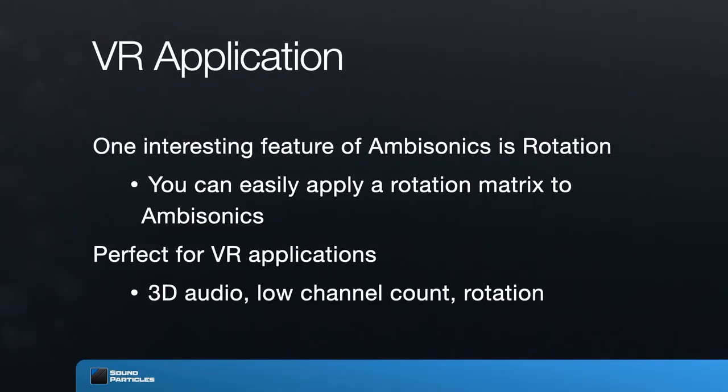This rotation capability is particularly useful for VR applications. When you're in VR and start moving your head around, you're rotating the camera position, which means you need to rotate the sound field accordingly. Ambisonics is perfect for VR because it gives you 3D sound with a small number of audio channels — starting with four — and rotation is very easy. This is one of the main reasons ambisonics, long confined to academic institutions, has grown in popularity again, mainly due to VR and 360 video applications.